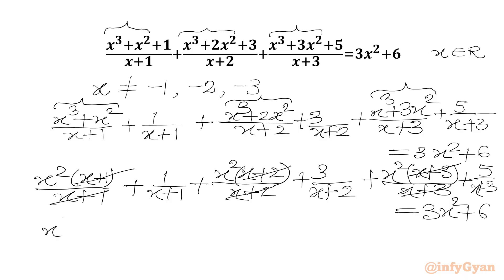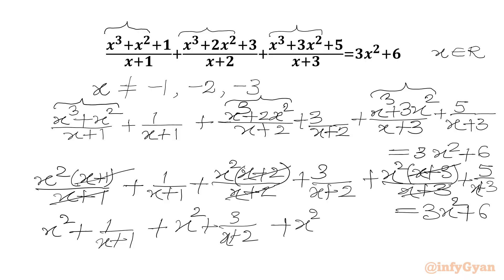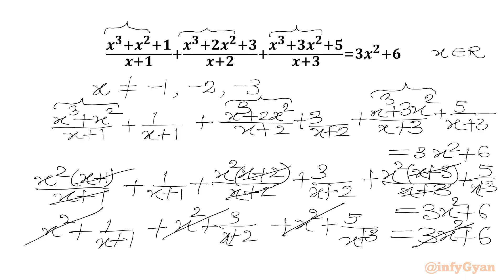We get (x²+1)/(x+1) from the first term, (x²+3)/(x+2) from the second term, and (x²+5)/(x+3) from the third term on the LHS, and on the RHS we have 3x²+6. Now x²+x²+x² gives us 3x², which we subtract from both sides, leaving 1/(x+1) + 3/(x+2) + 5/(x+3) = 6.